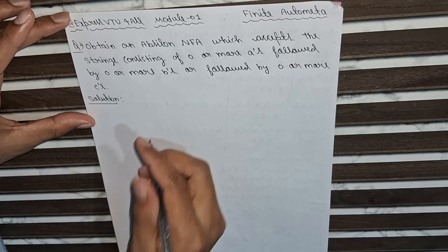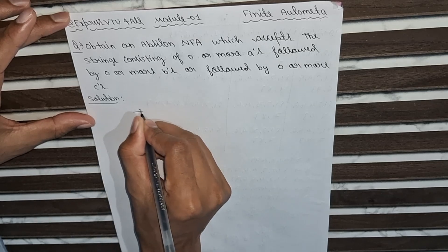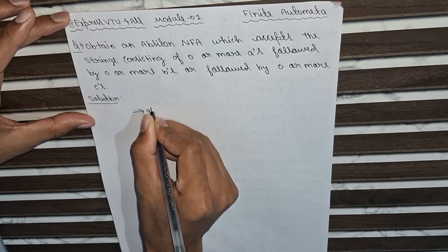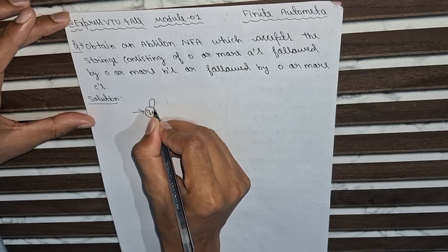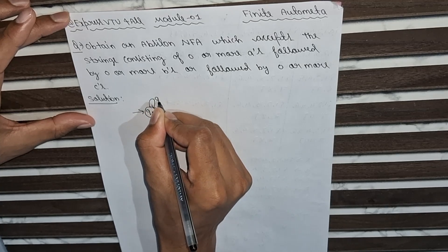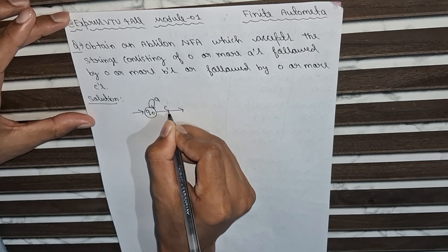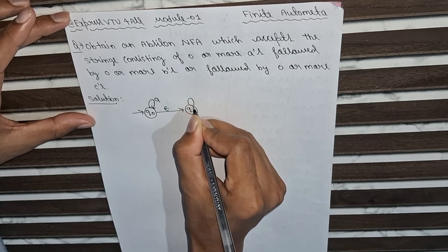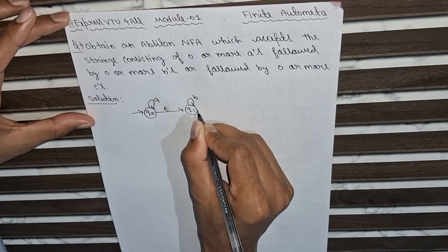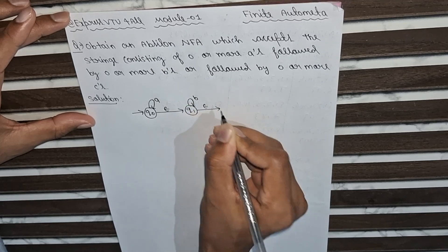With the help of epsilon, we can find this diagram. First, the starting state will be q0. As here, it should start with a, and then followed by b. So from q1 it will be b, and with epsilon means nothing, zero.